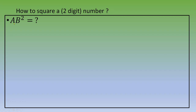To calculate the square of a two-digit number, there is a method. Let's call 'a' a digit between 1 and 9, and 'b' a digit between 0 and 9. So for the number 'ab', you want to calculate its square. Remember the remarkable identity: (a + b)² equals a² plus 2ab plus b². This is a soft reminder.